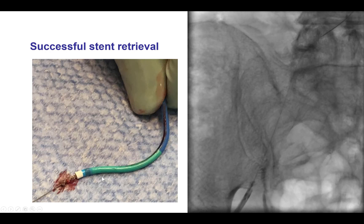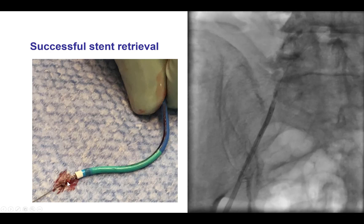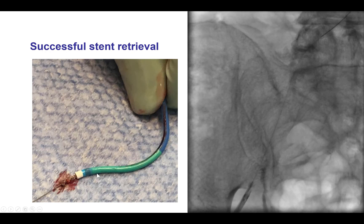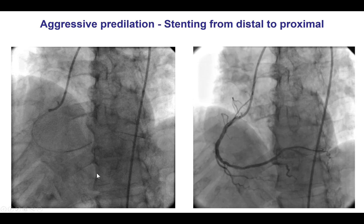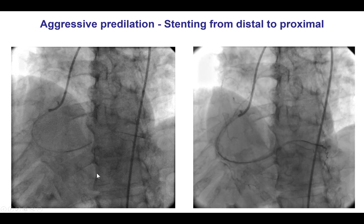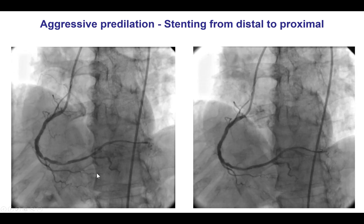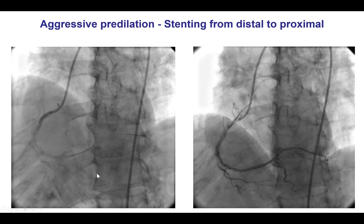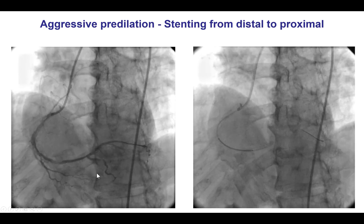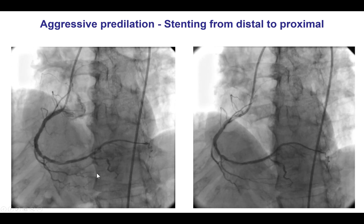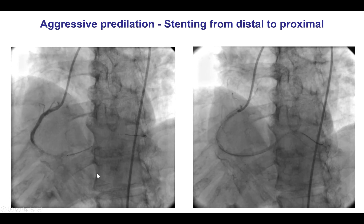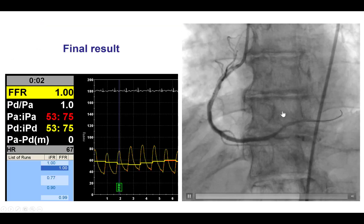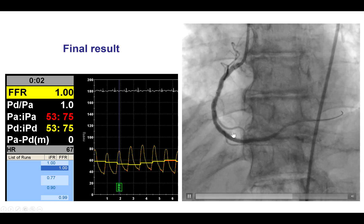This is how it looked: the guiding catheter with the stent partially outside the guide catheter and partially inside. The most likely cause for this was that we did not prepare the vessel well. Therefore, after having gone through this process, we performed multiple high-pressure balloon inflations to prepare the vessel.